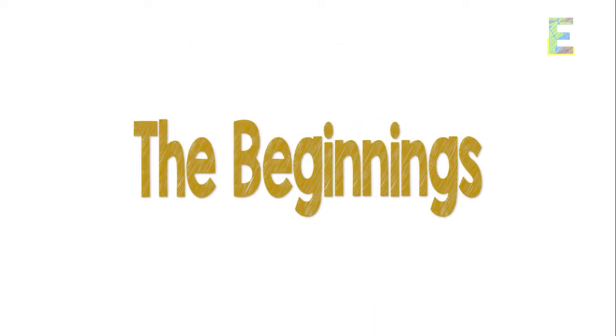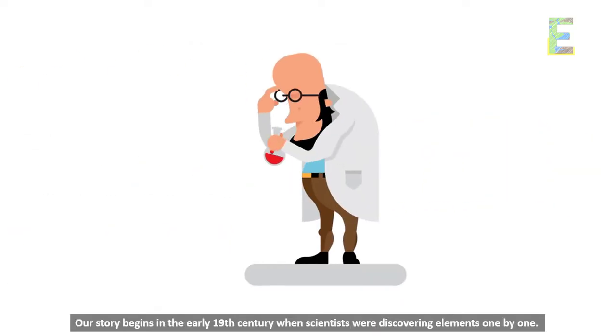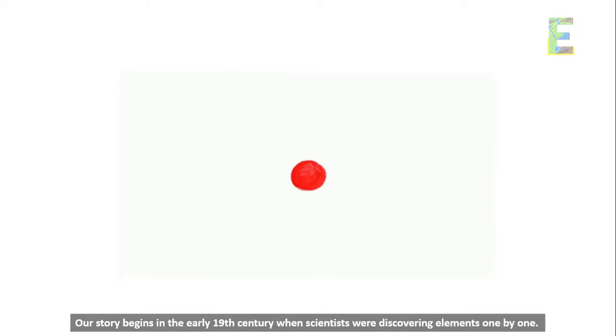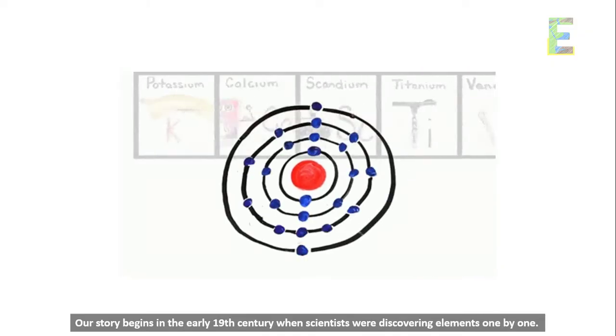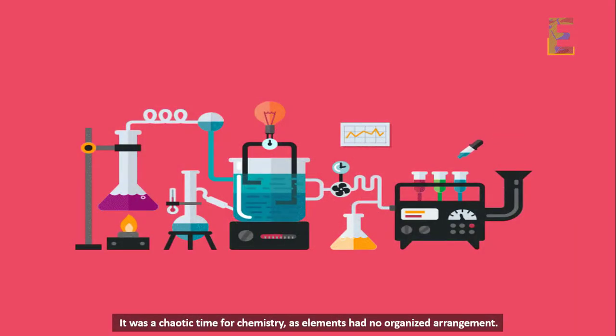The beginnings. Our story begins in the early 19th century when scientists were discovering elements one by one. There was a chaotic time for chemistry, as elements had no organized arrangement.